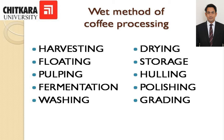It starts with harvesting. Traditionally, coffee supplied for wet processing is selectively hand-picked so that the level of immature cherry is kept to less than a few percent. Floating: harvested cherry is first put into water. Most of the over-mature cherries float, separating them from the prime cherry. Pulping: skinned cherry containing prime beans is pulped in pulping machines, which rupture the cherry, expelling the coffee beans within.